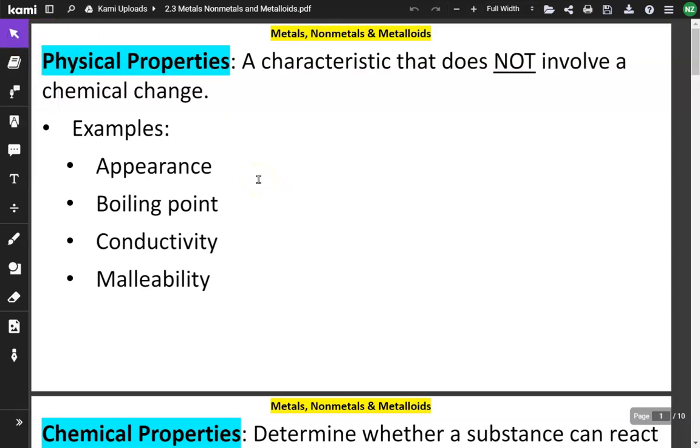We're going to start by talking about physical properties. Physical properties are a characteristic that does not involve a chemical change, like appearance, the color, whether or not it has a luster to it, it's shiny, boiling point, conductivity, malleability. Malleability means that if we press down on it, we can flatten it into a disc.